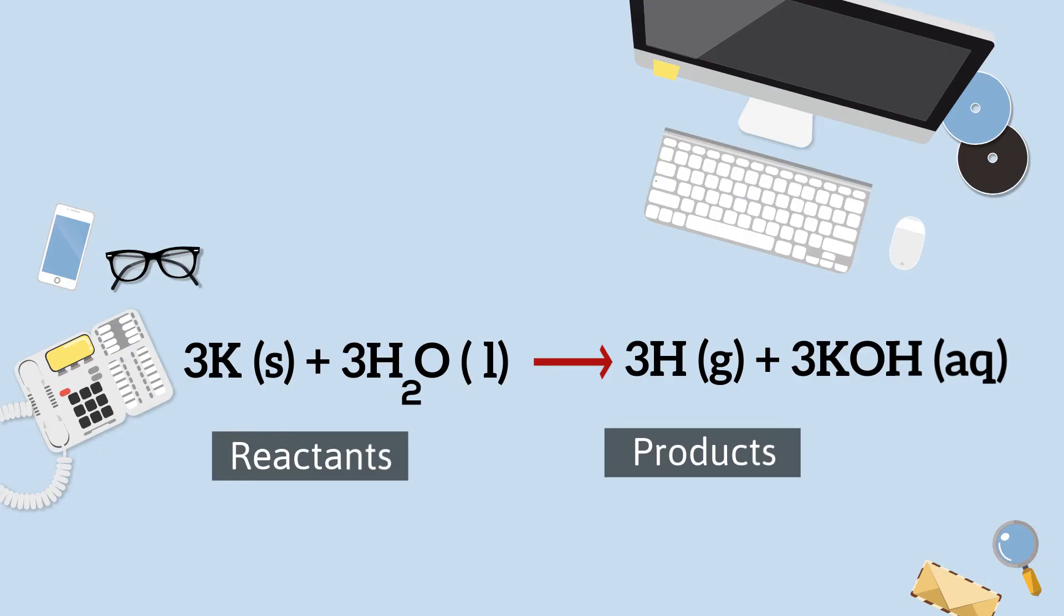So in this chemical equation, you have solid potassium plus a liquid water, and then it makes hydrogen gas, notice the G, and it's dissolved in water.